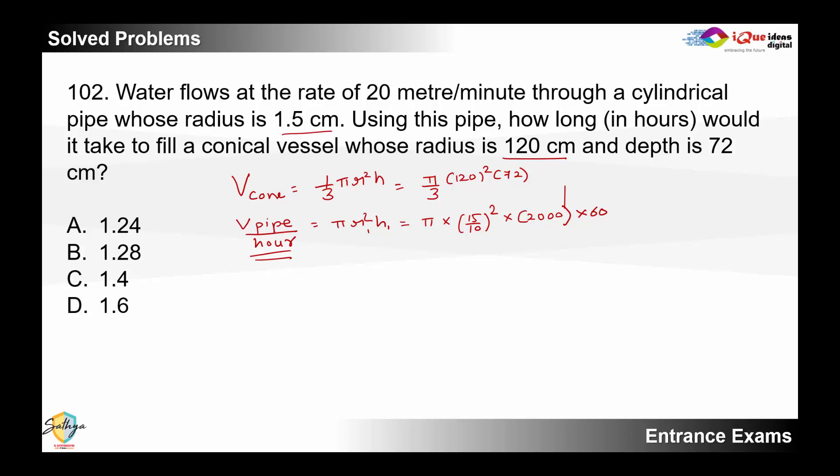So pi by 3 into 120 square, I write it as 120 into 120 divided by 72 the whole upon pi into 15 by 10 into 15 by 10 multiplied by 2000 multiplied by 60. And once you simplify this it is 96 by 75.